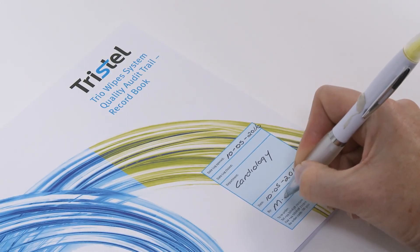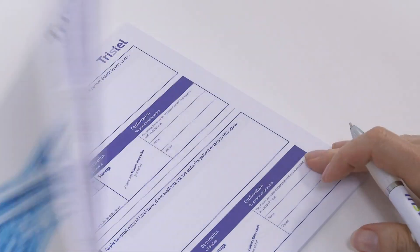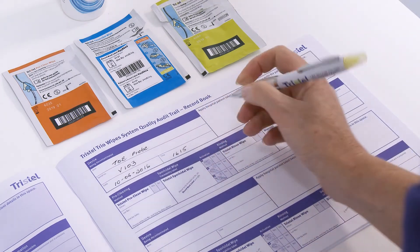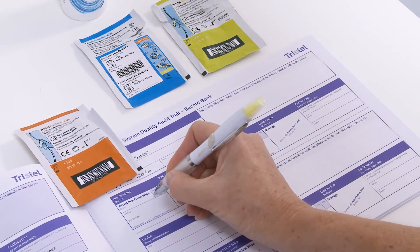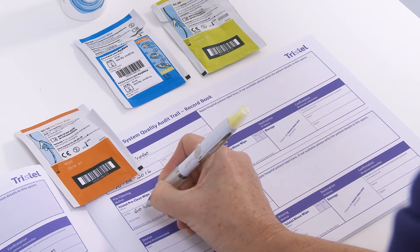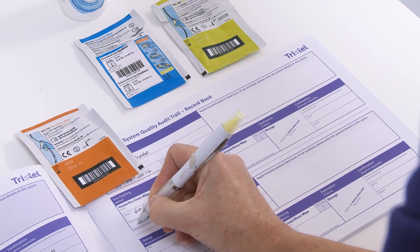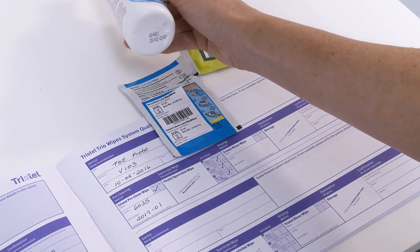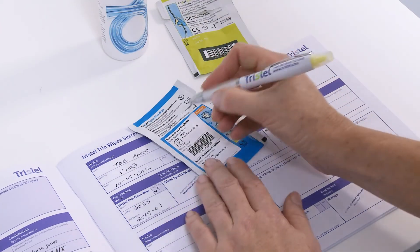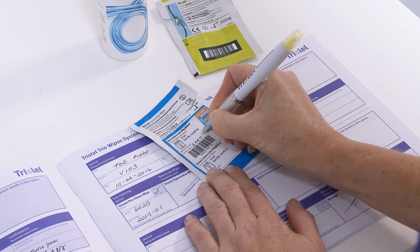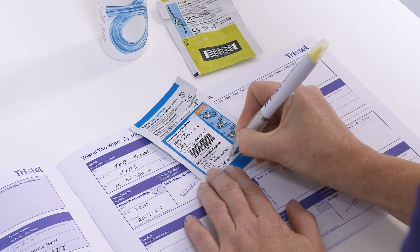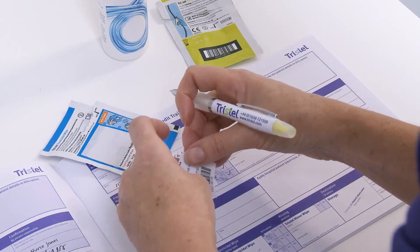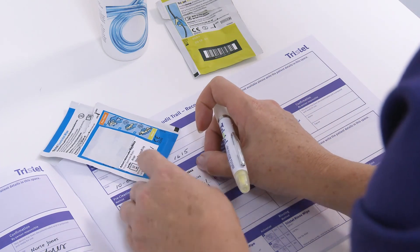Complete the Tristel Quality Audit Trail Record Book as shown. The Tristel Quality Audit Trail Record Book enables all decontamination procedures to be recorded. It validates the identification of the instrument and the date and time it is decontaminated. It validates the pre-cleaning step and the activation of the sporicidal wipe and the high-level disinfection step.